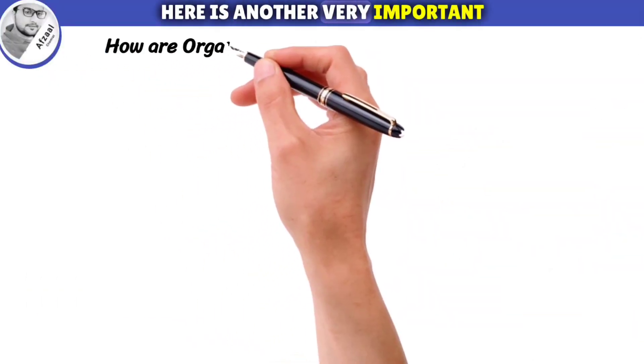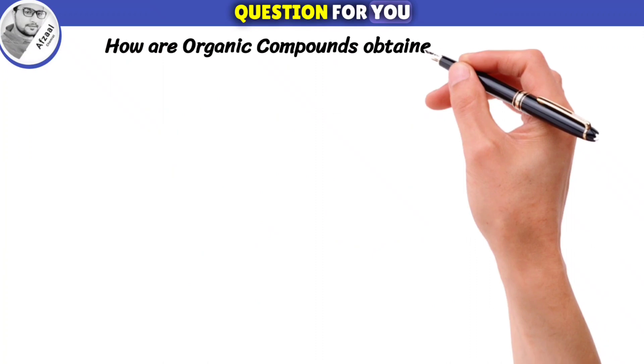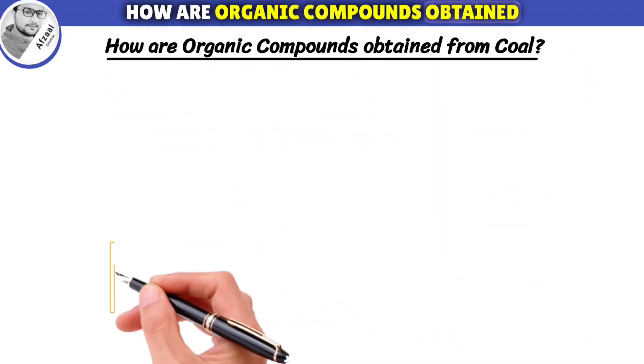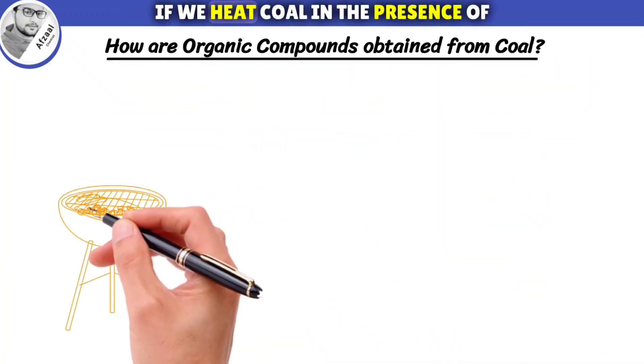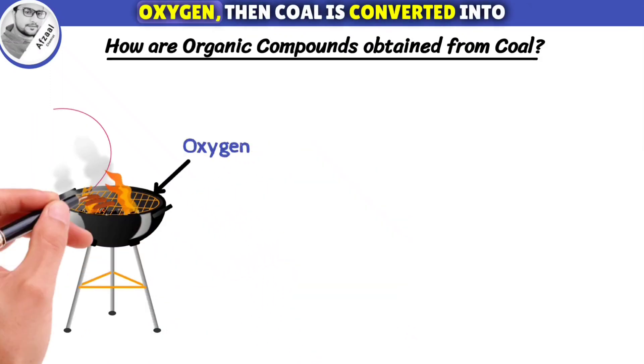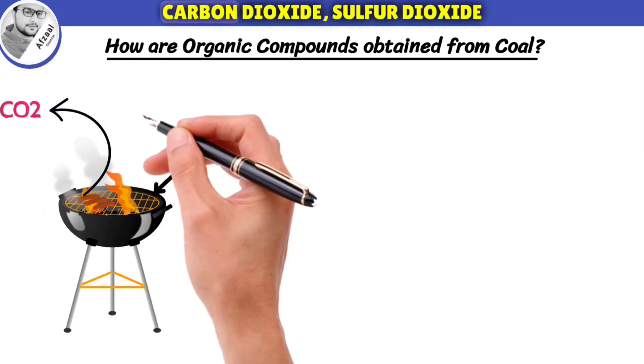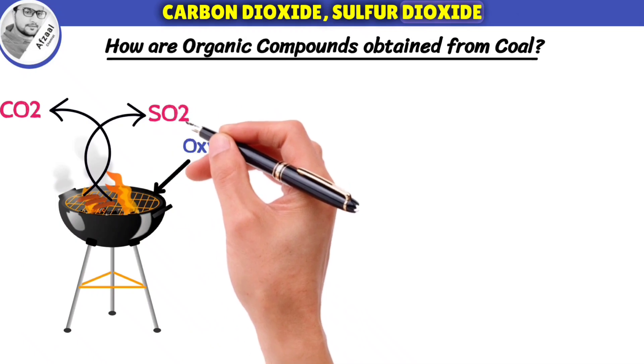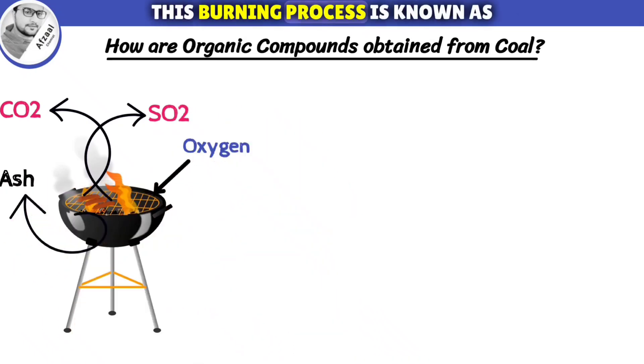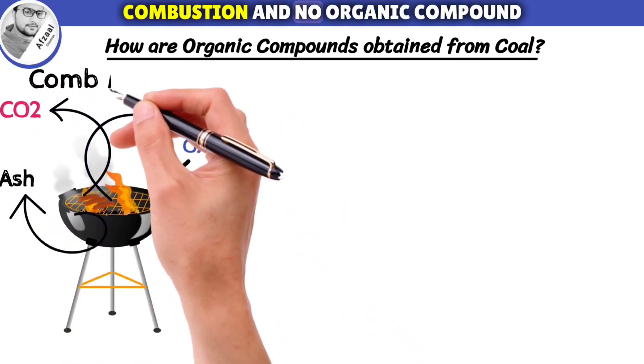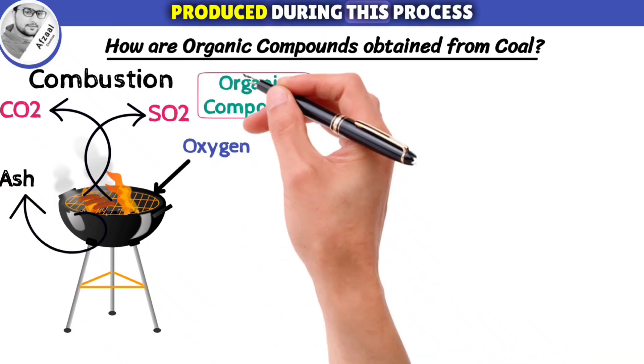Here is another very important question for you. How are organic compounds obtained from coal? If we heat coal in the presence of oxygen, then coal is converted into carbon dioxide, sulfur dioxide and ash. This burning process is known as combustion and no organic compound is produced during this process.